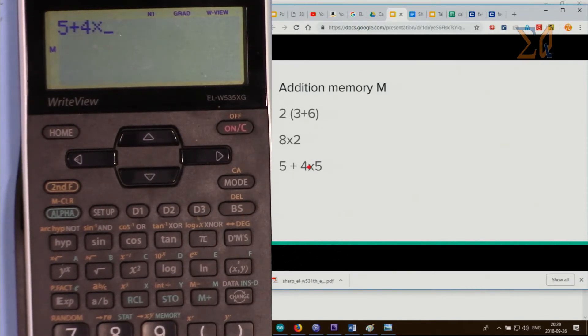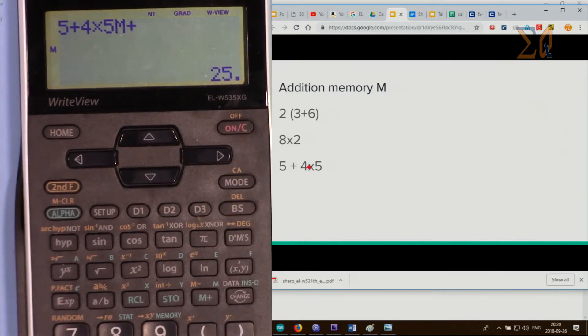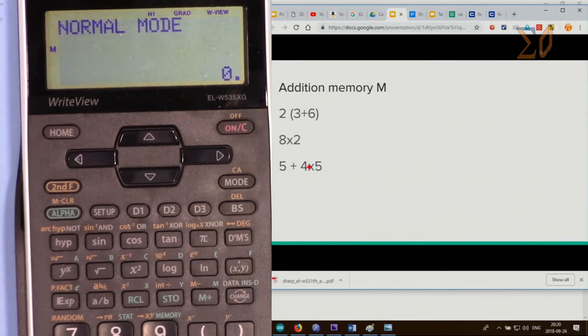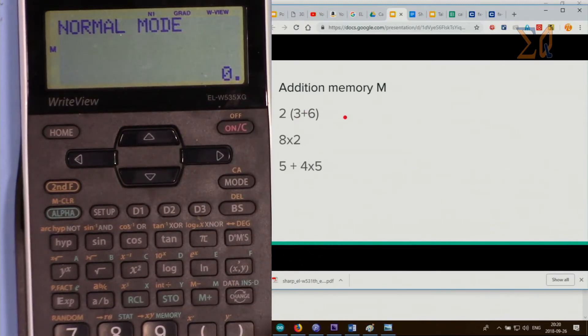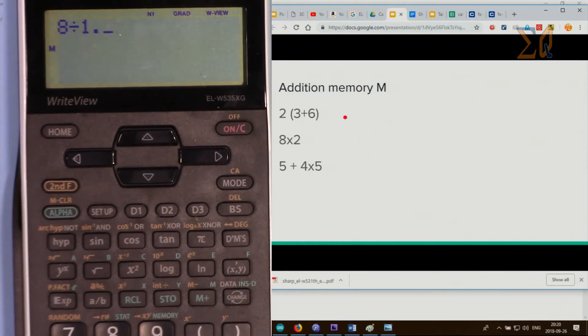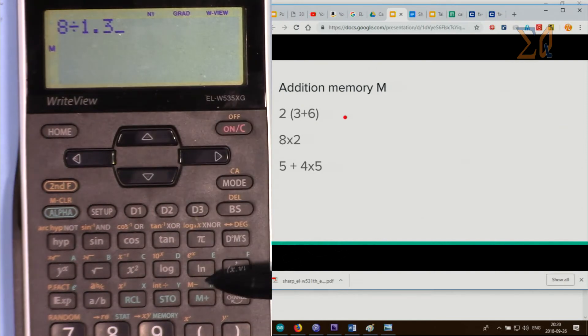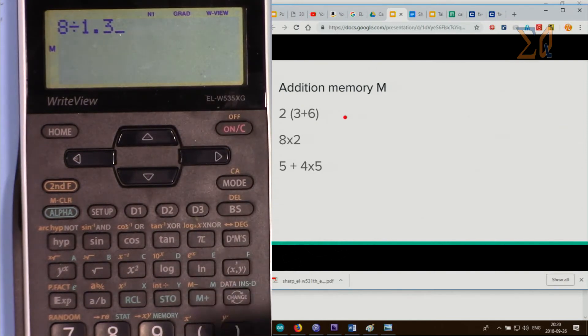Let's say you want to do some calculation and subtract it from M. Let's say A divided by 1.3, and you want to subtract the result from memory. We have M minus here for that. Press second function and M minus. This has been subtracted from memory.